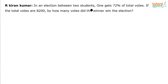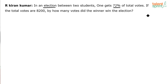In an election between two students, one gets 72% of total votes. If the total votes are 8,200, by how many votes did the winner win the election?